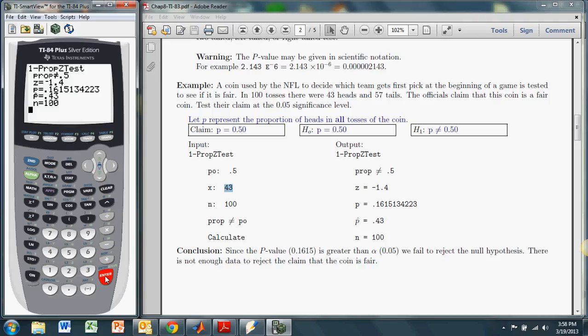Now that gives me the test statistic, which is negative 1.4. So our z value is negative 1.4. And the p-value, this big decimal here, 0.1615 and some change. It also gives you p-hat and the sample size. But basically we're looking at the p-value. The p-value is about 0.16, which is definitely bigger than the significance level. So in this case, we cannot reject the null hypothesis.